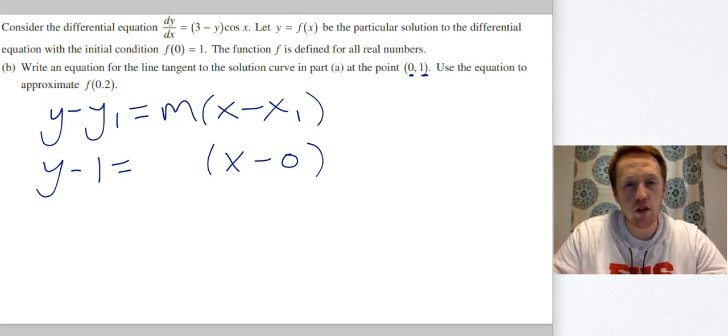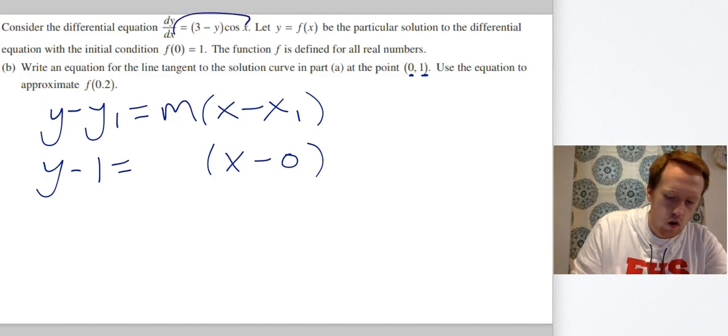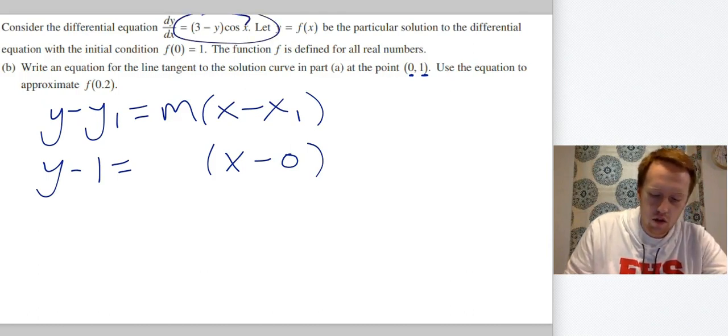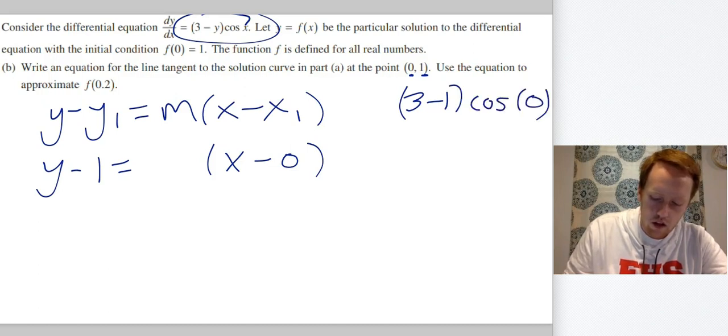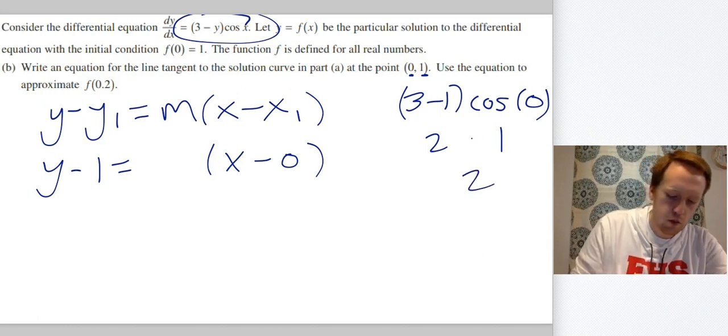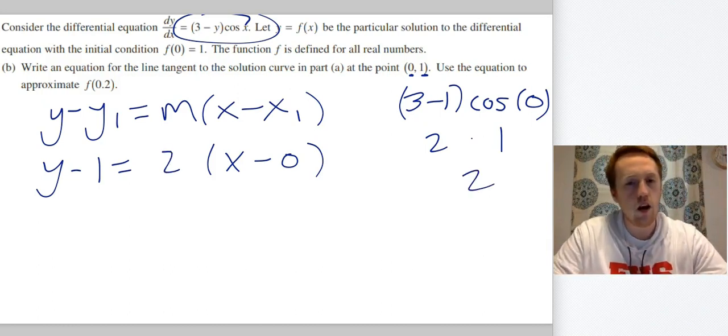So I'm going to do 3 - 1 times cos(0). So that's 2 times 1. So 2 is my slope.